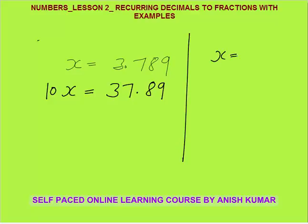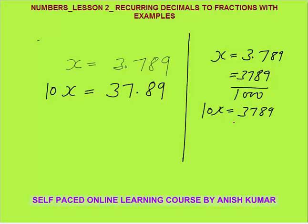Why? Because x was 3.789, which means 3789 divided by 1000. The decimal point with 3 digits after it means 3 zeros. If you multiply by 10, you get 3789 by 100, that is 37.89. So, if you multiply a number by 10, the decimal shifts to the right, or equivalently, a digit shifts to the left of the decimal. Simply put, to shift one digit to the left of decimal, multiply by 10.